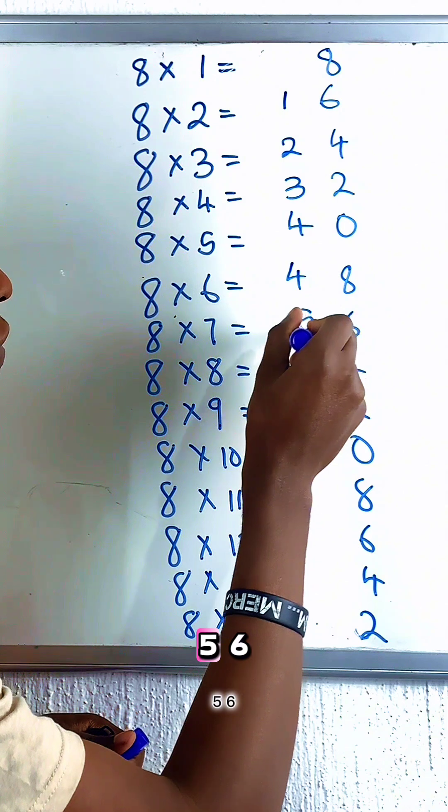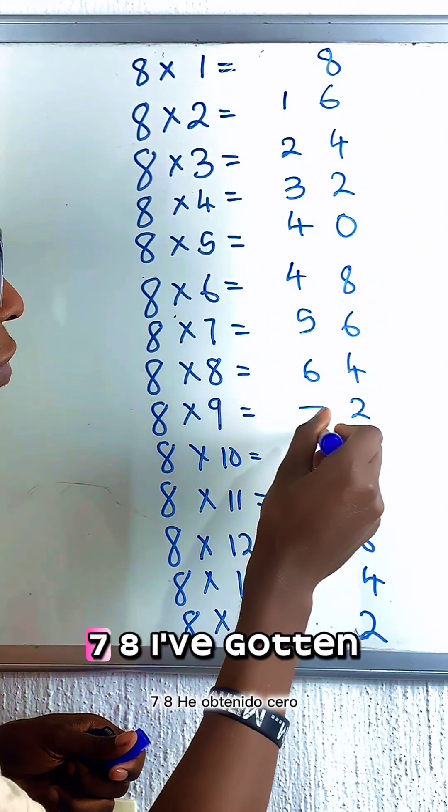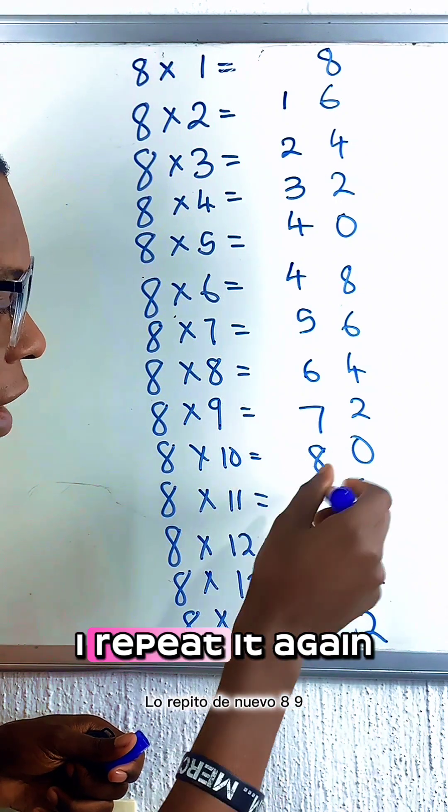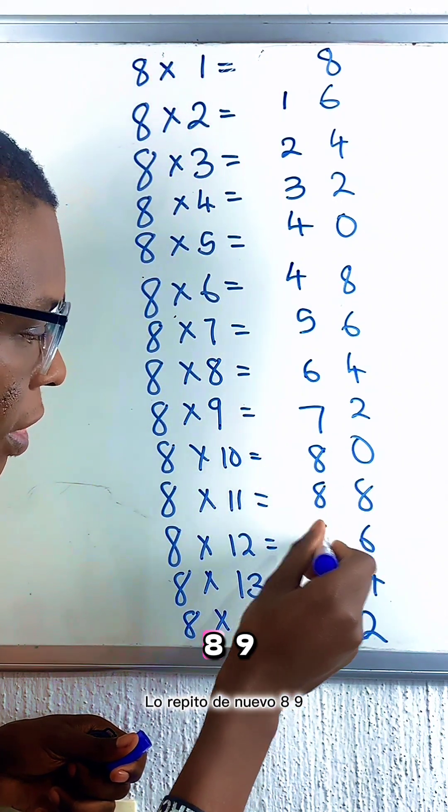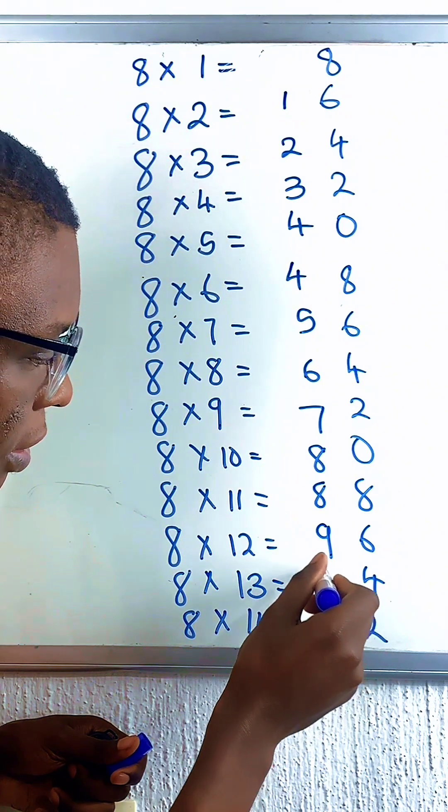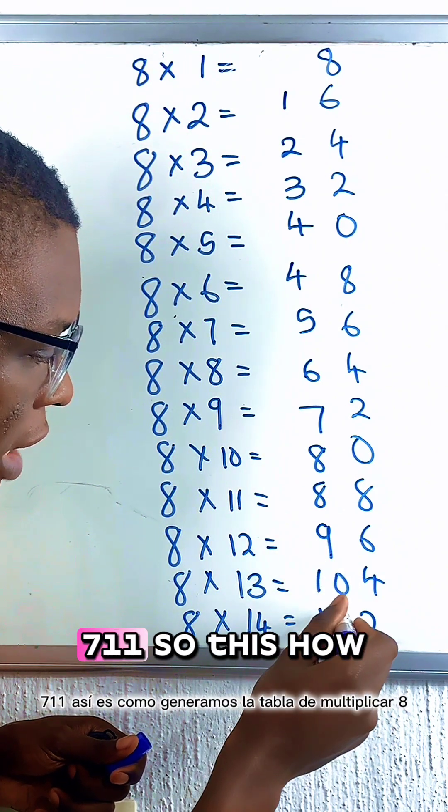4, 5, 6, 7, 8. I've gotten zero, I repeat it again. 8, 9, 10, and 11.